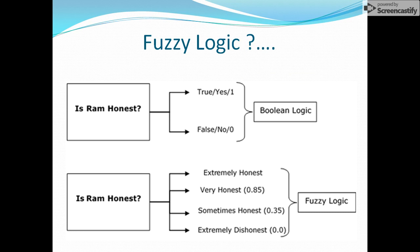Secondly, we have another question: is Ram honest? You could have some specific or clear answers: true or false, yes or no, one and zero. This is how the Boolean algebra or Boolean logic works. And before machine learning or before fuzzy logic, all computers or machines work with Boolean logic.